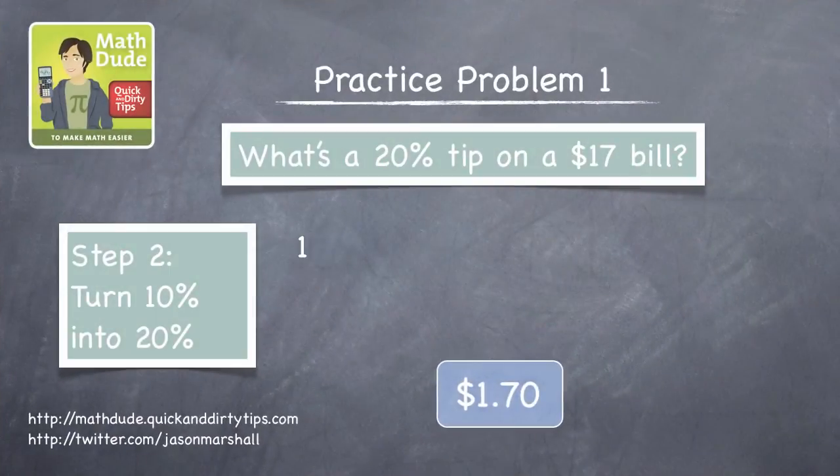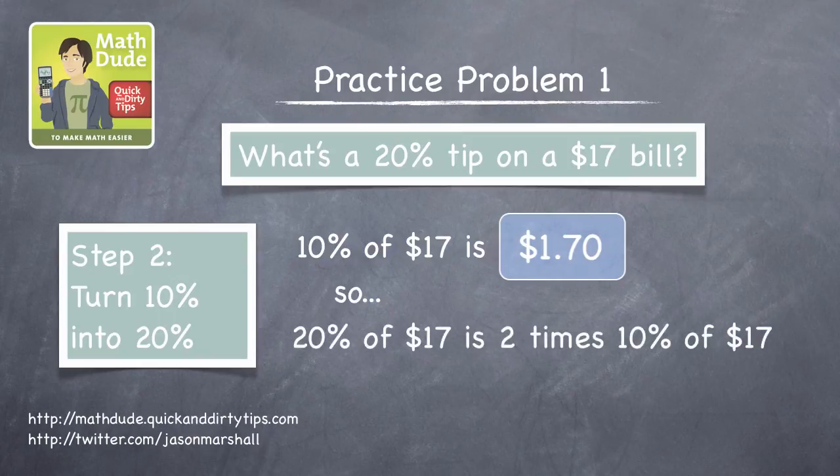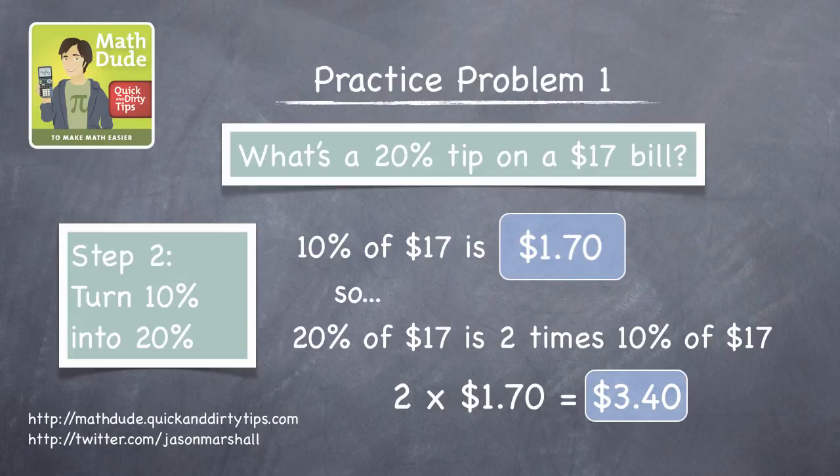Now that we know 10%, all we have to do is double that amount to find out what 20% is. 2 times $1.70 is $3.40, so a 20% tip is $3.40.